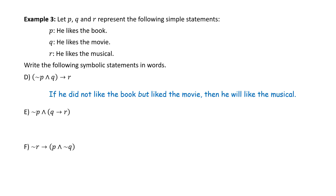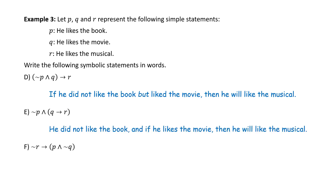Part E: ∼P ∧ (Q → R). Notice that the grouping is slightly different from Part D. In English: 'He did not like the book, and if he likes the movie, then he will like the musical.' The sentences in D and E have different meanings.